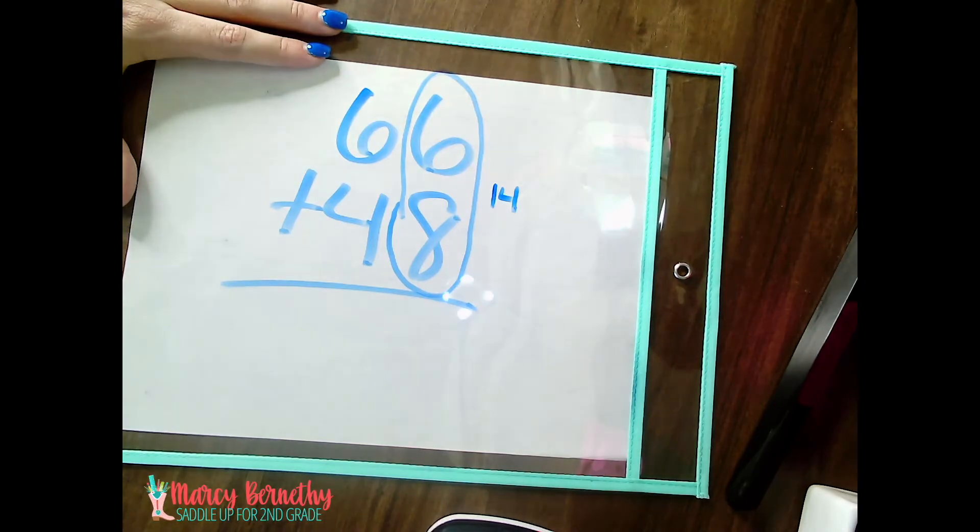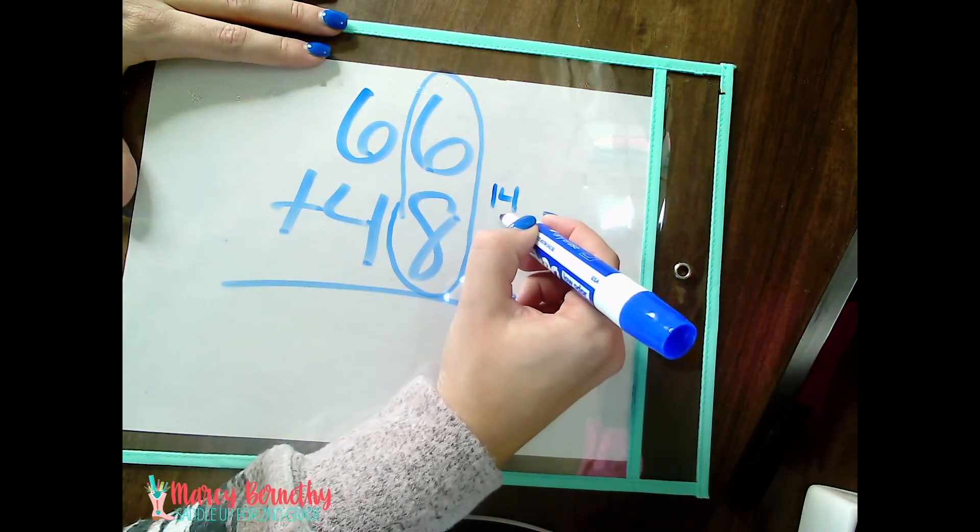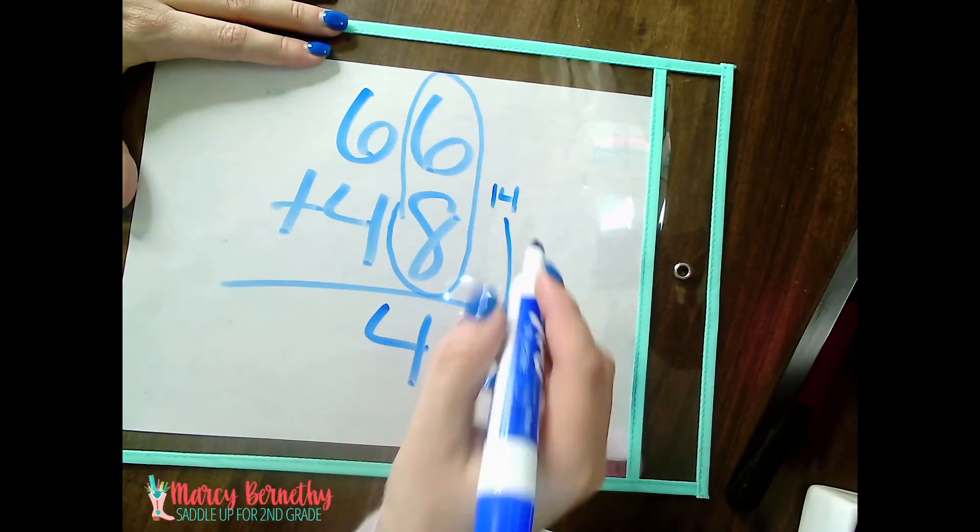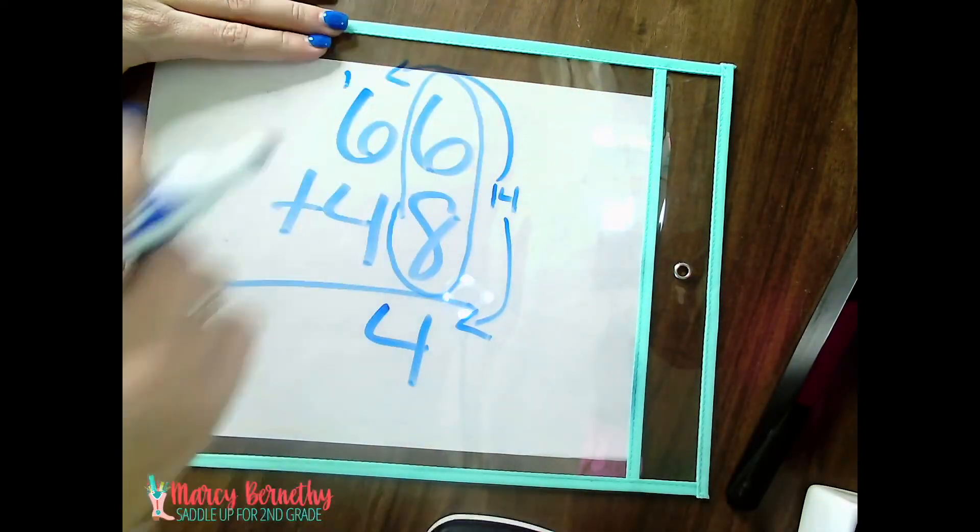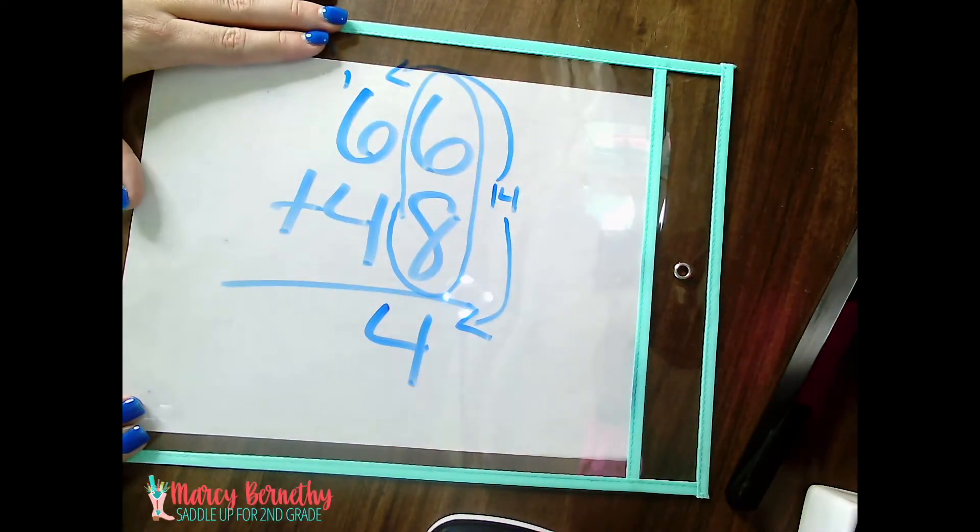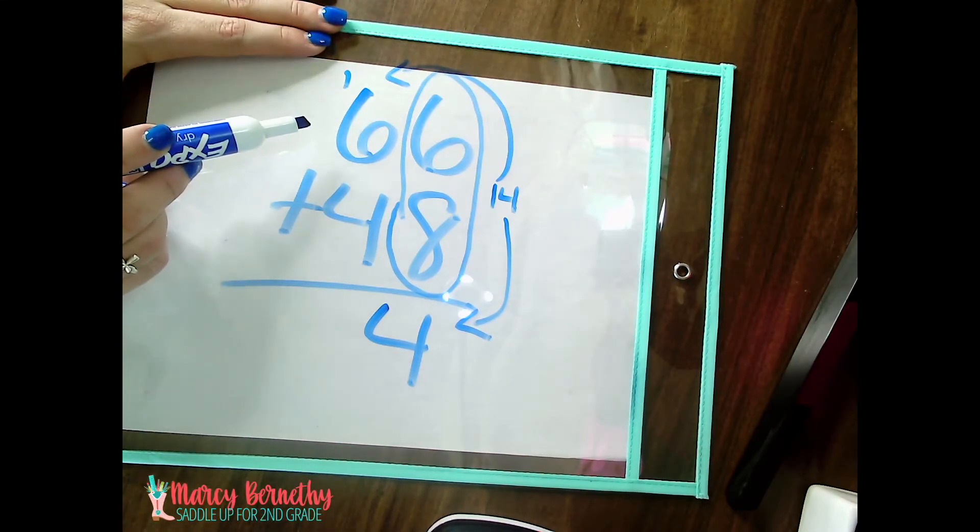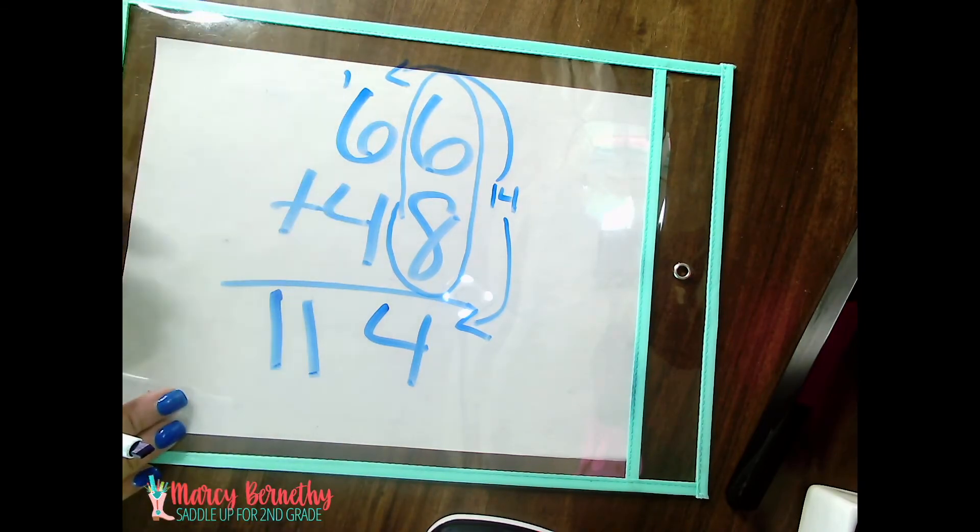So my four is going to go down to the ones place. And I'm going to regroup and carry my one and put it above the tens place. Then I'm going to add one plus six equals seven, seven plus four equals 11. So my answer is 114.